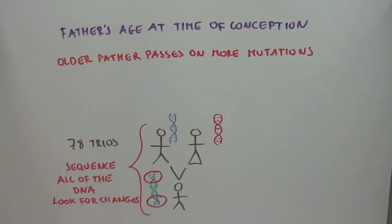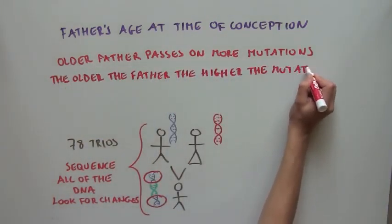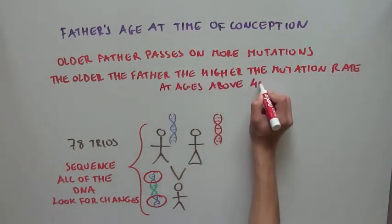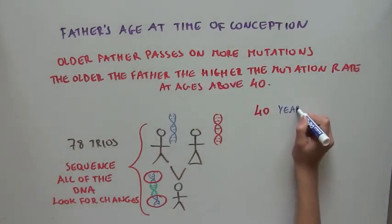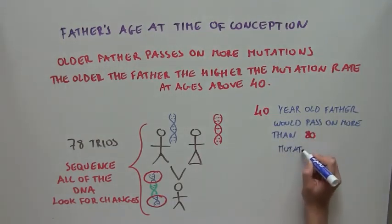The data also indicated that the older the father at the time of conception, the higher the mutation rate at ages above 40. So if the father was 40 at the time of conception, then he would pass on more than two mutations per year of his life, so more than 80 mutations.